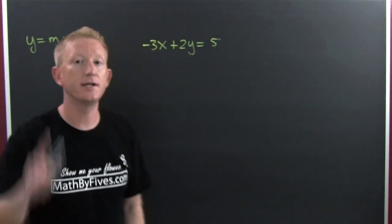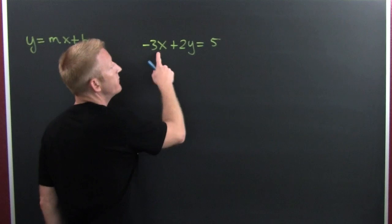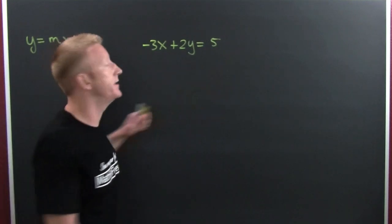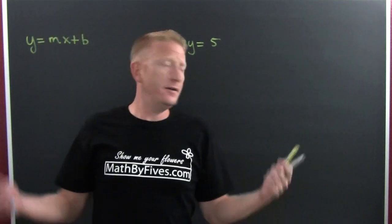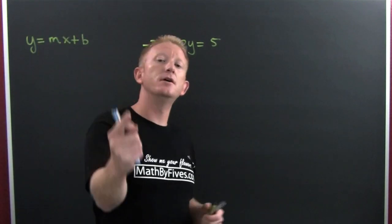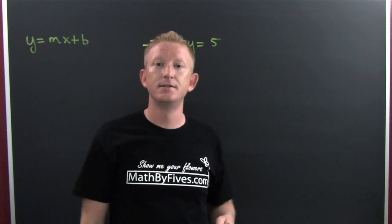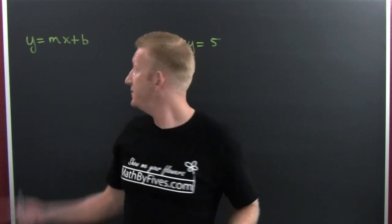Or you could get up some values. You can choose a value for x and get a value for y, and then you can choose another value for x and get the value for y, and then you can use those two points and use the slope form for that. Or you can use y equals mx plus b.